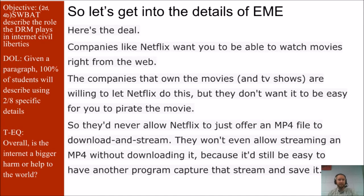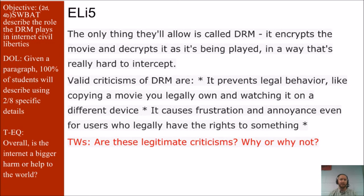Companies like Netflix want you to be able to watch movies right from the web. The companies that own the movies and TV shows are willing to let Netflix do this, but they don't want it to be easy for you to pirate the movie. So they'd never allow Netflix to just offer an MP4 file to download and stream — they won't even allow streaming in MP4 without downloading it, because it'd be easy for another program to capture that stream and save it. The only thing they'll allow is DRM, which encrypts a movie and decrypts it as it's being played in a way that's really hard to intercept.